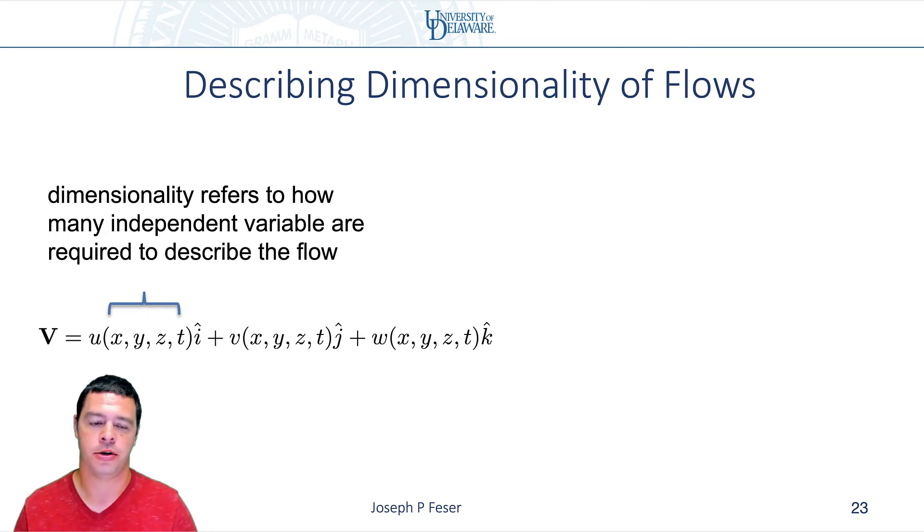In general, the velocity that we're going to describe in our Eulerian reference frame, the velocity could be a function of position, so that's an x, y, and z coordinate. The velocity could potentially change with x, y, and z, where I am in the flow, as well as time if it's a transient flow. And so there are potentially four independent variables that describe each component of the velocity.